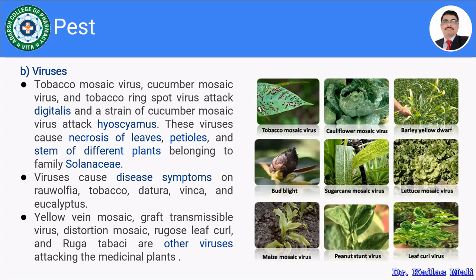Viruses cause disease symptoms on rauwolfia, tobacco, dhatura, vinca, and eucalyptus. Other viruses include yellow vein mosaic virus, graft transmissible virus, distortion mosaic virus, vigosi leaf curve, and rugas tabasi — these attack medicinal plants and infest the leaves, reducing the yield of medicinal plants.